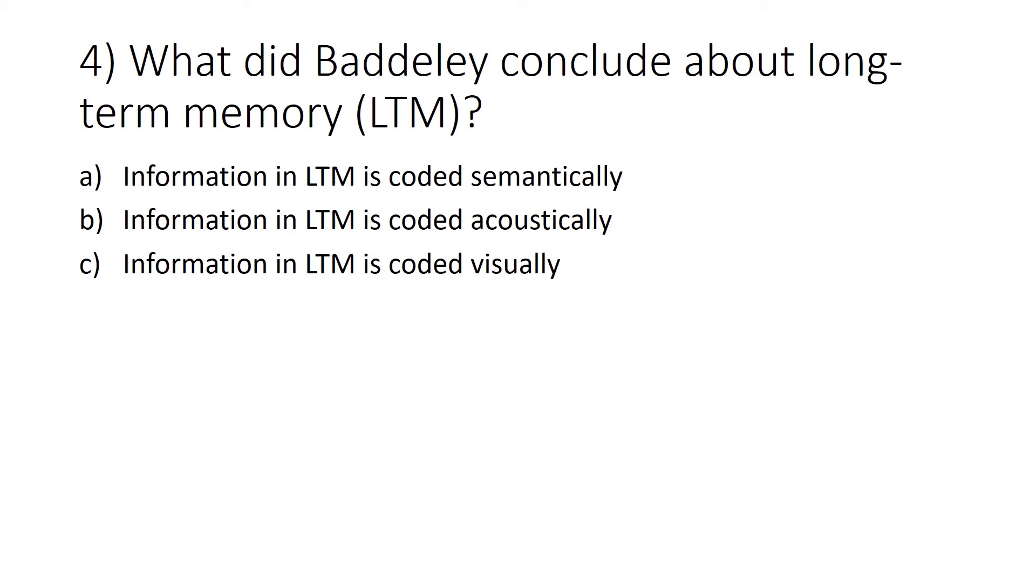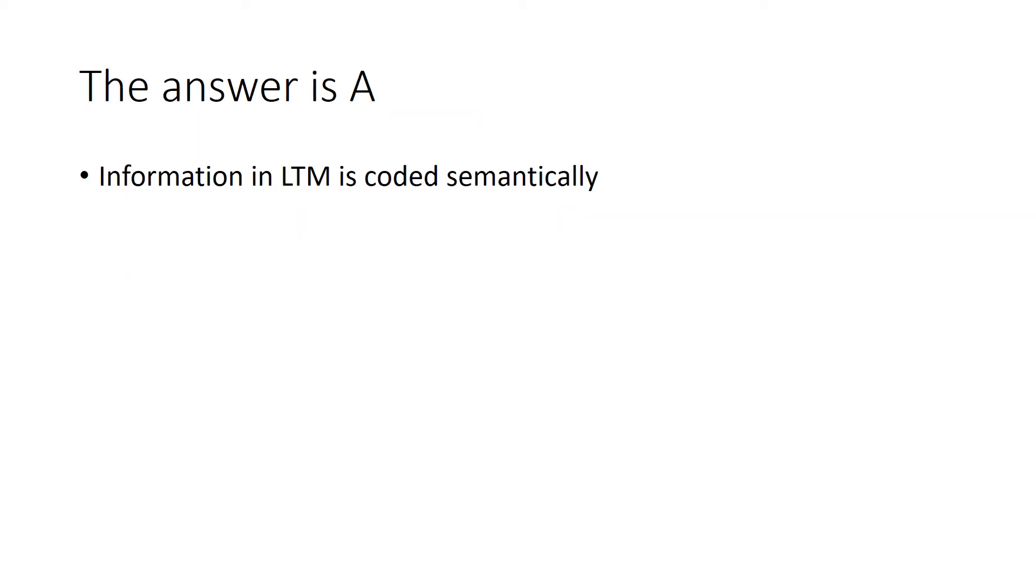The answer is A. They concluded that information in long-term memory is coded semantically, because people found it more difficult to remember the semantically similar words towards the end of the experiment.